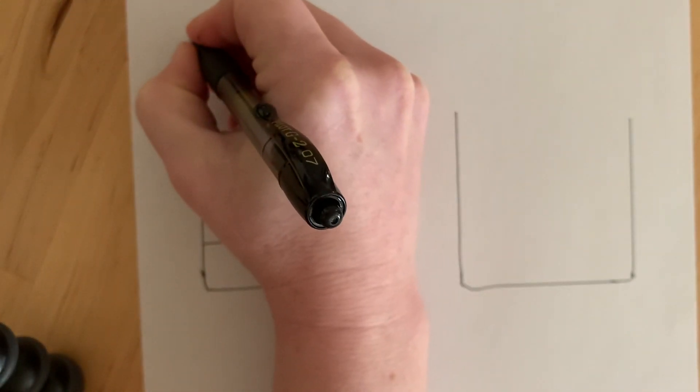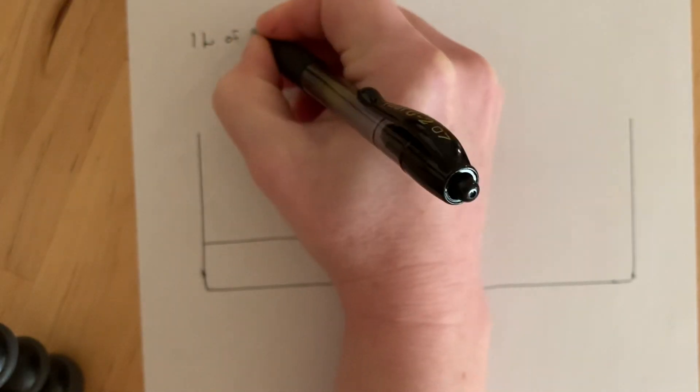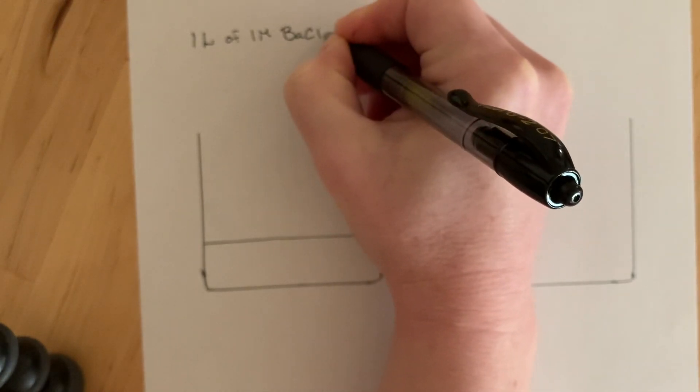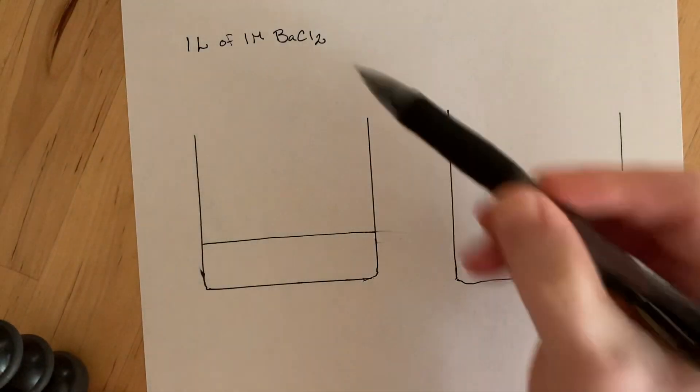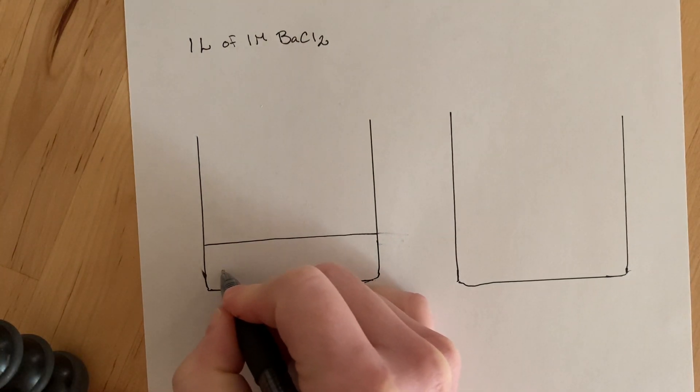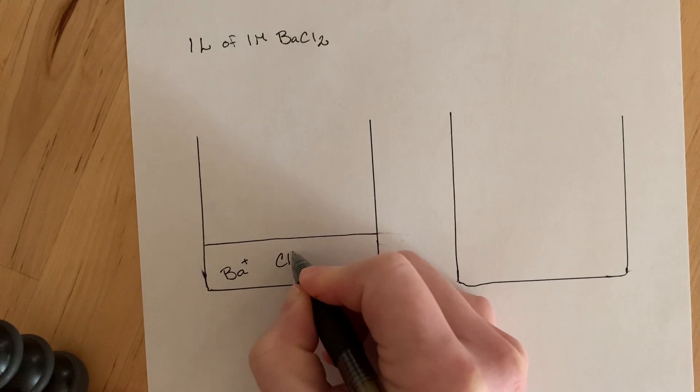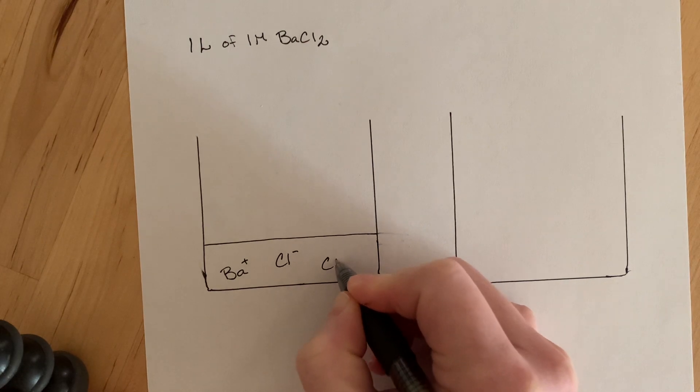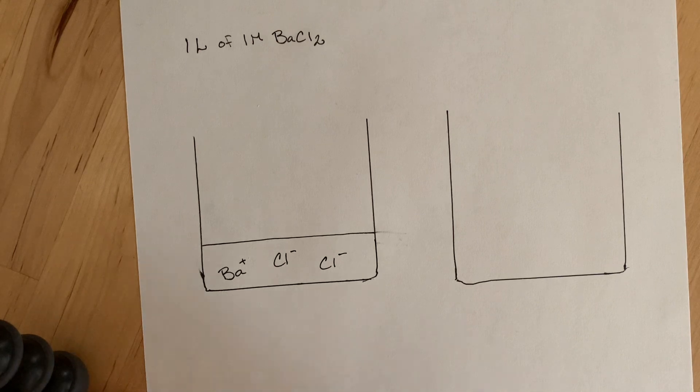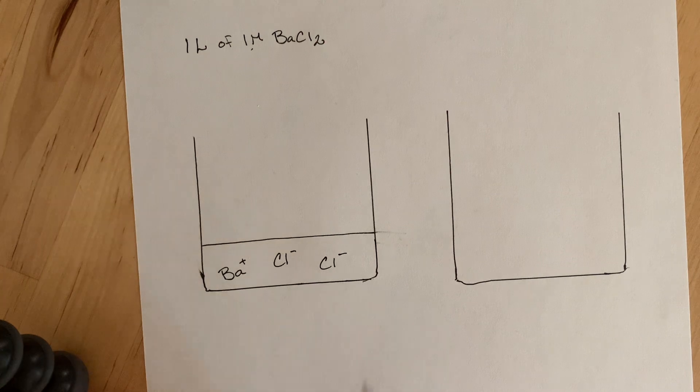In this one, we will have one liter of one molar barium chloride. So essentially we have one mole of barium chloride. And that's a strong electrolyte, so it dissociates completely. So this is one molar of barium chloride, so we have one mole of compound.